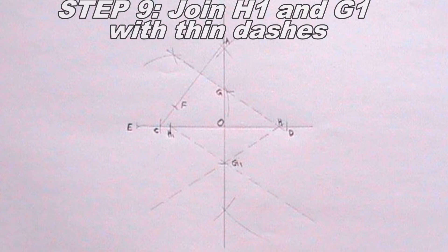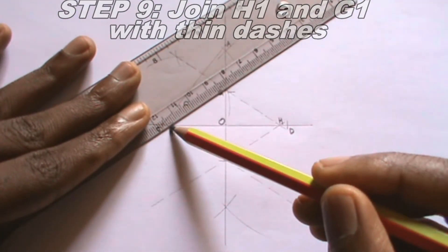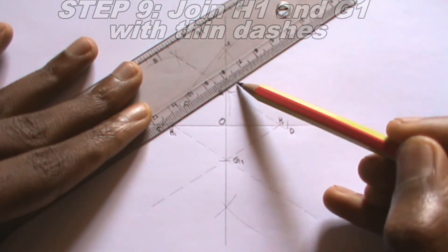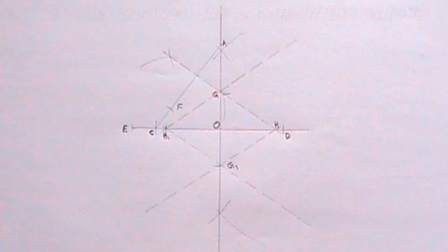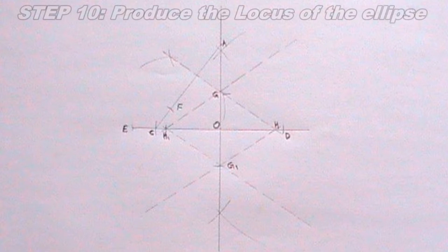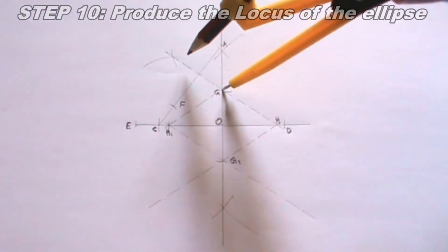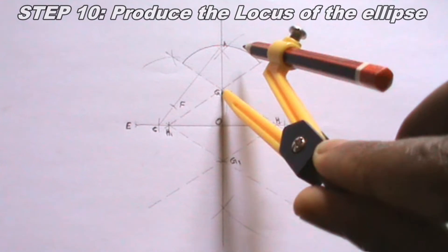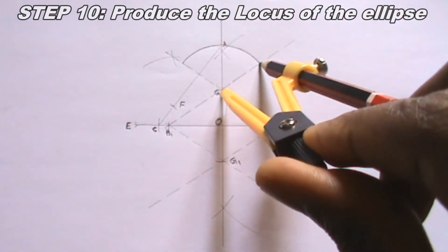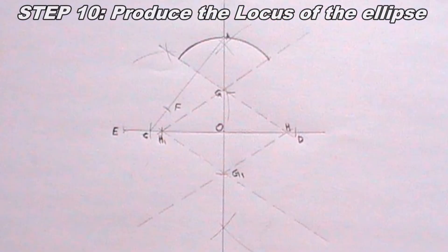Also join H and G the same way. Having done all of these steps, it is time to produce the locus of the ellipse. Now for me to produce the locus of the ellipse, I will start by placing my compass on point G and cutting an arc this way. Next I will place my compass on point H and cut another arc this way.